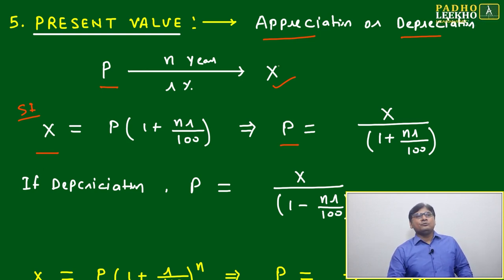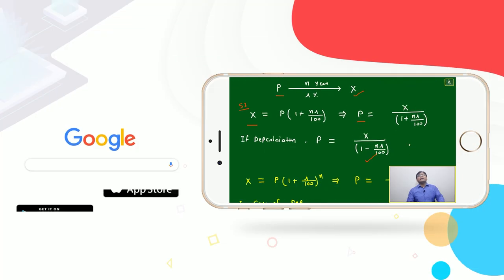Then P, that is your present value. This is your present value. X is your future value. Then X by 1 plus nr by 100, that will become your present value.